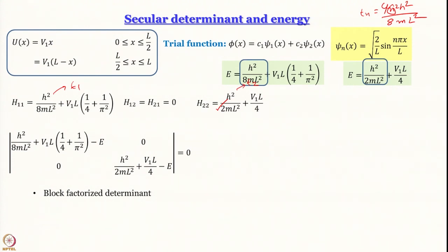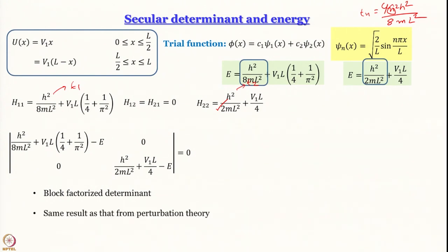The first root is lower in energy and corresponds to the ground state. This agrees with perturbation theory, which gives the zeroth-order energy plus a first-order correction — exactly what we obtained here. Both variational theory and perturbation theory are in agreement.